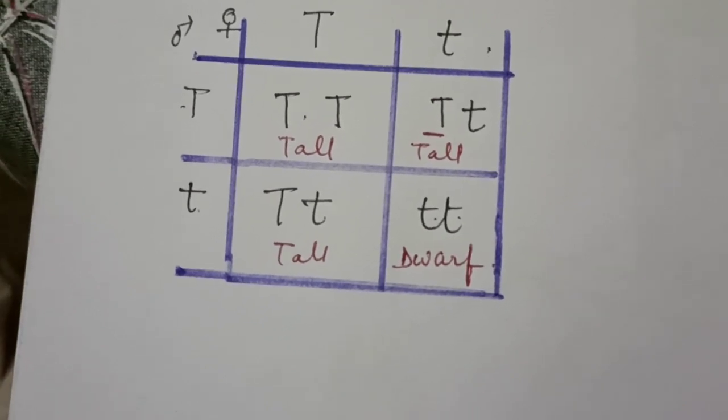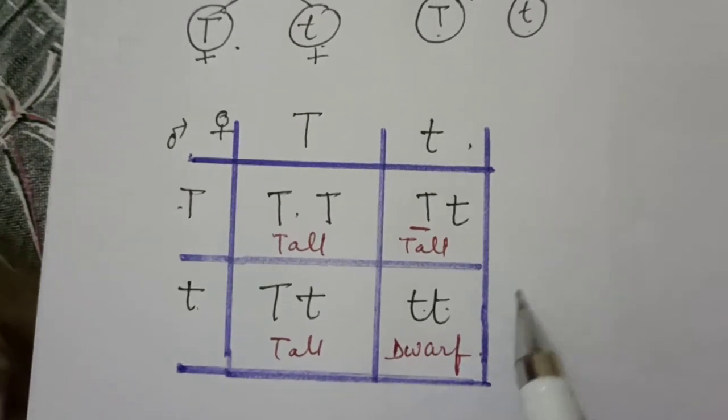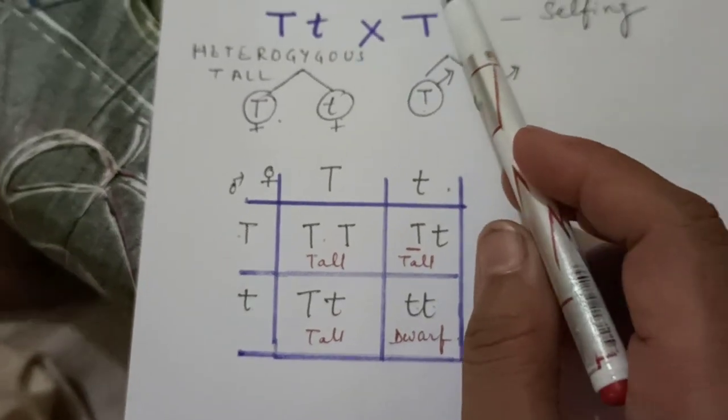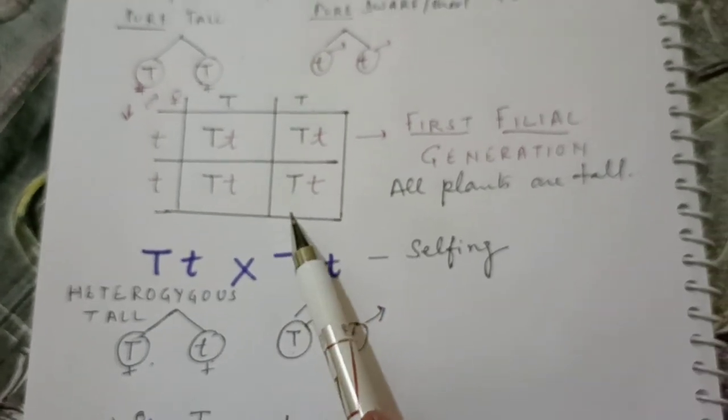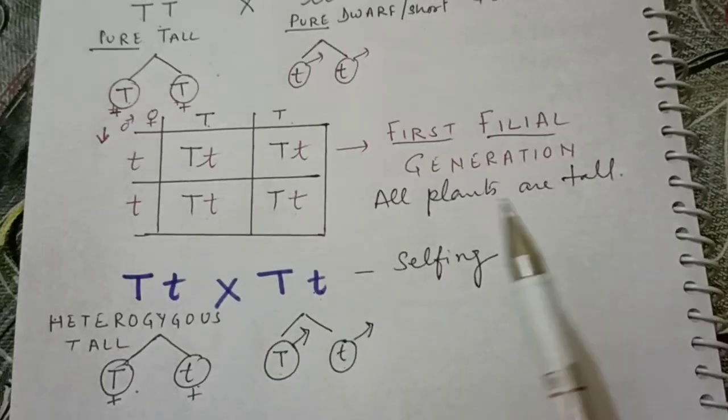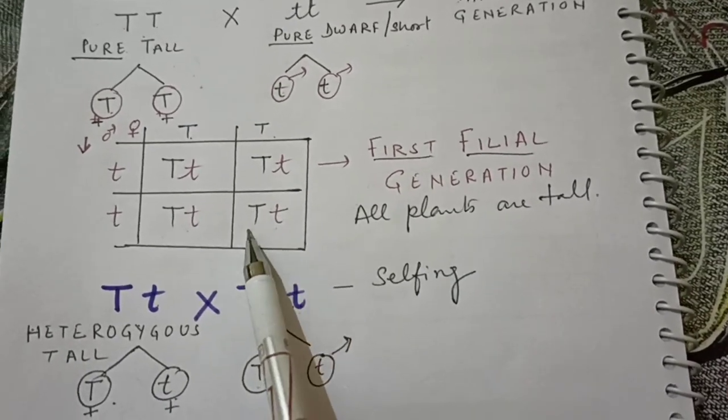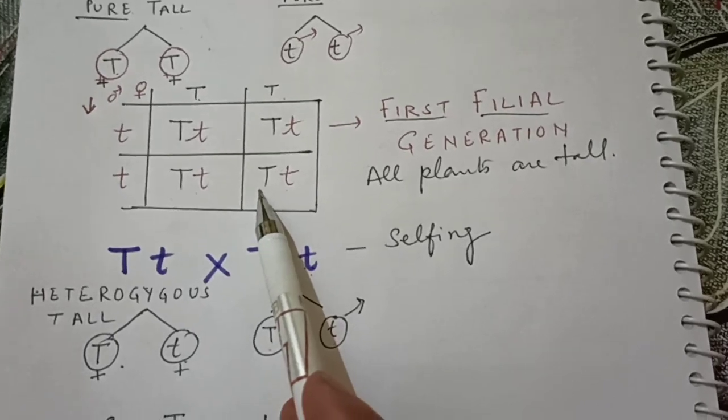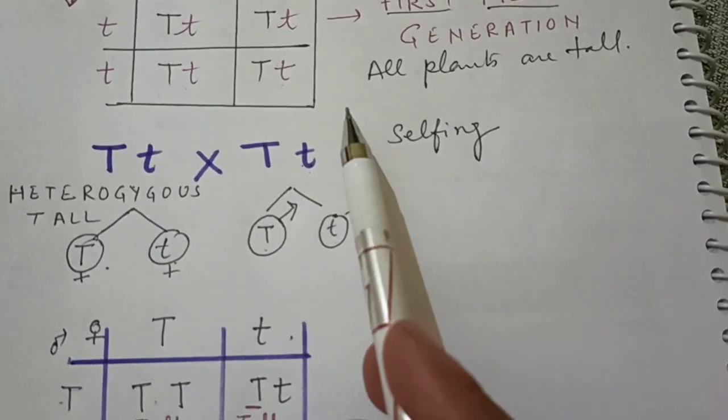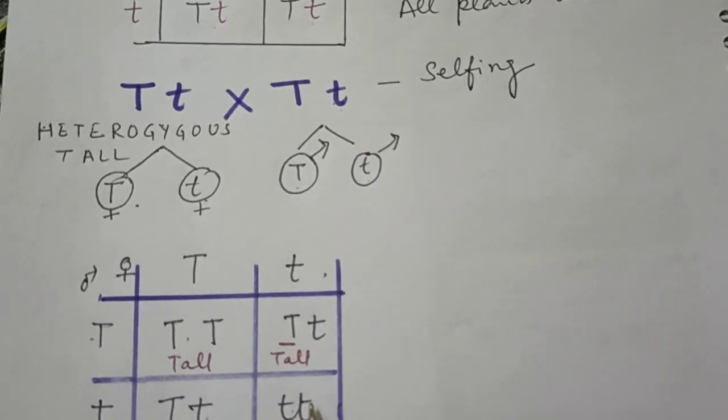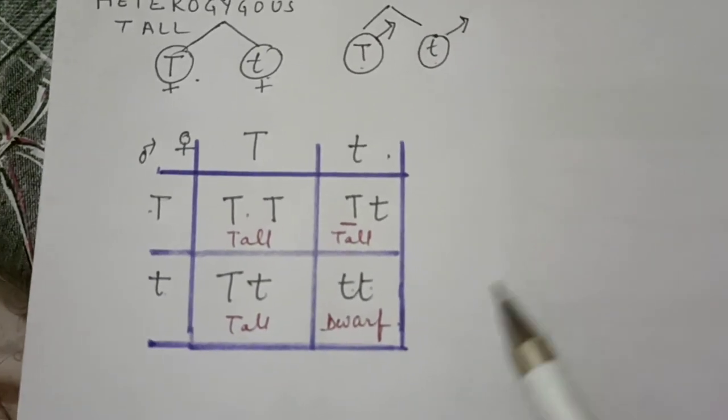So what does it mean? That the dwarf or the allele of the dwarf trait, it was not mixed into the F1 generation. No doubt that the character, the trait or the allele was not able to express itself into the F1 generation, but it was not blended with the dominant one. By selfing of two plants of the F1 generation, now the trait which was not visible in the F1 generation is clearly visible into the F2 generation.